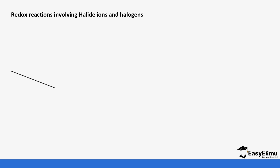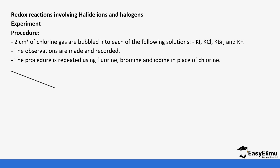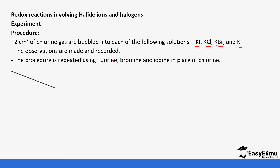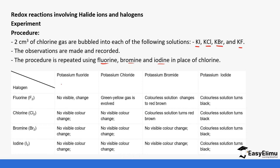We're looking at redox reactions involving halide ions and halogens. We bubble chlorine gas into solutions of potassium iodide, potassium chloride, potassium bromide, and potassium fluoride. The observations were recorded, and then the procedure was repeated using fluorine, bromine, and iodine in place of chlorine. When fluorine is bubbled into potassium fluoride there is no change — the ions are the same. Fluorine in potassium bromide produces a brown gas, which is bromine. Fluorine in potassium iodide turns the solution black because of the presence of iodine.